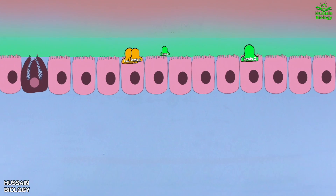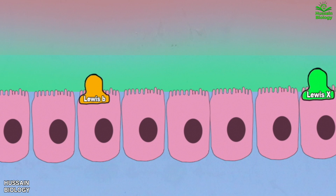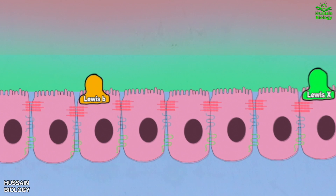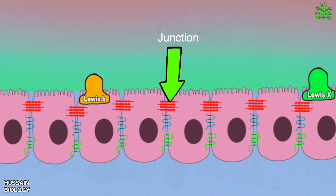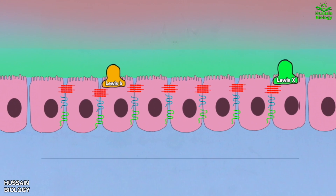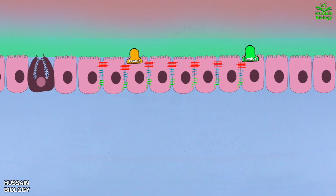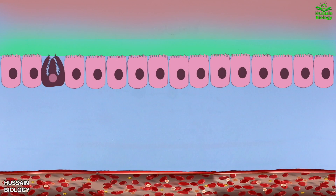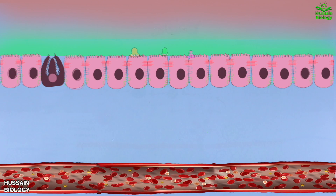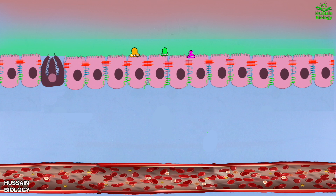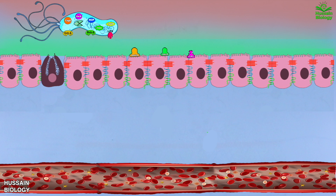Furthermore, if we see how these epithelial cells are tightly bound together, we can see proteins doing the job — E-cadherin junctions and tight junctions by occludin and claudin proteins shown in the diagram, which bind these cells in a monolayer. This is the normal structural basis of gastric mucosa prior to H. pylori infection.